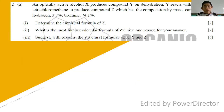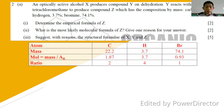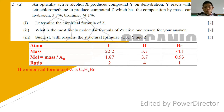Question number two: an optically active alcohol X produces compound Y on dehydration. Y reacts with bromine in tetrachloromethane to produce compound Z, which has a composition by mass of carbon 22.2%, hydrogen 3.7%, and bromine 74.1%. Determine the empirical formula for Z. Using the table with atom, mass, mole, and ratio, you find the ratio of C:H:Br is 2:4:1, so the empirical formula for Z is C2H4Br.